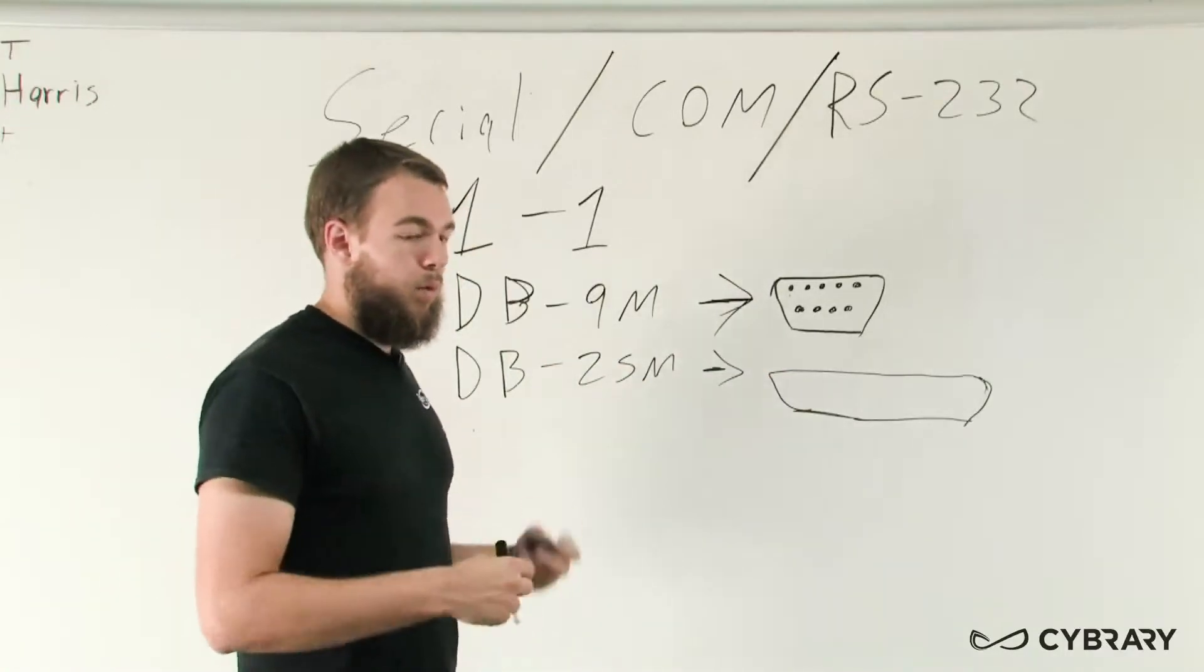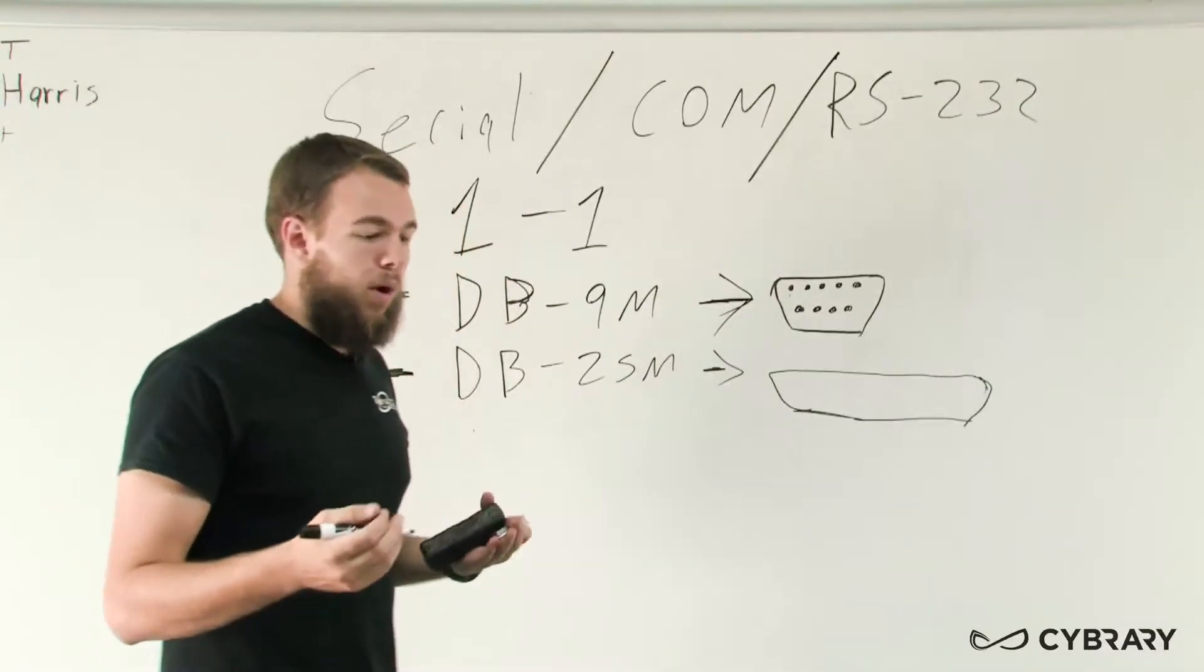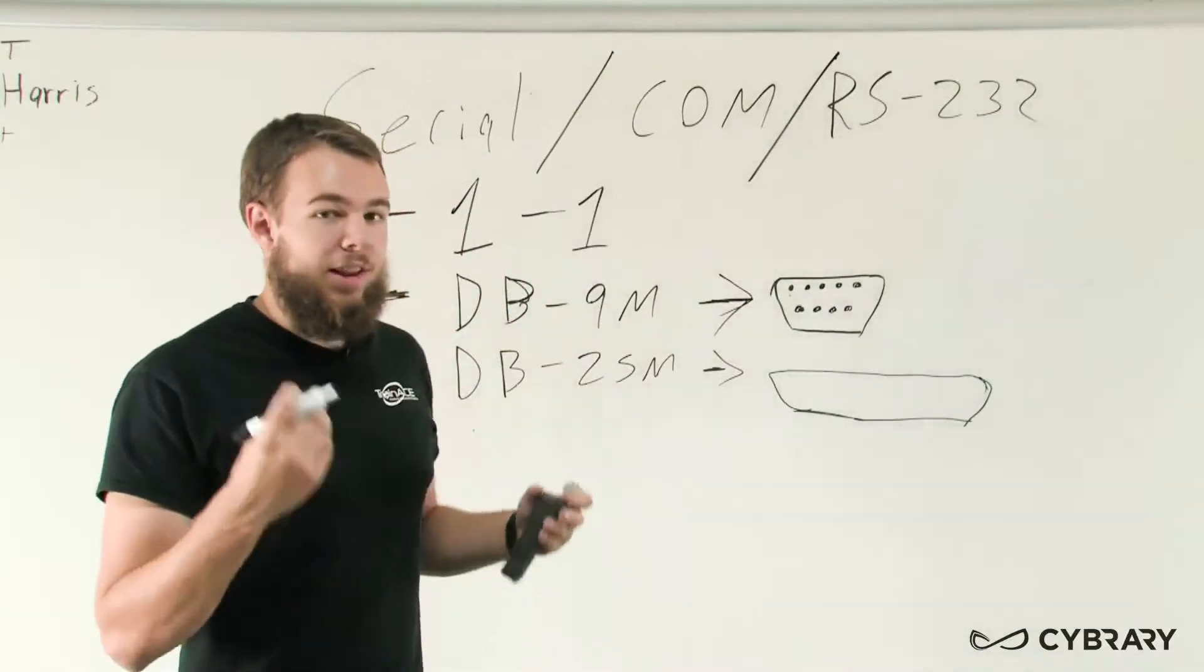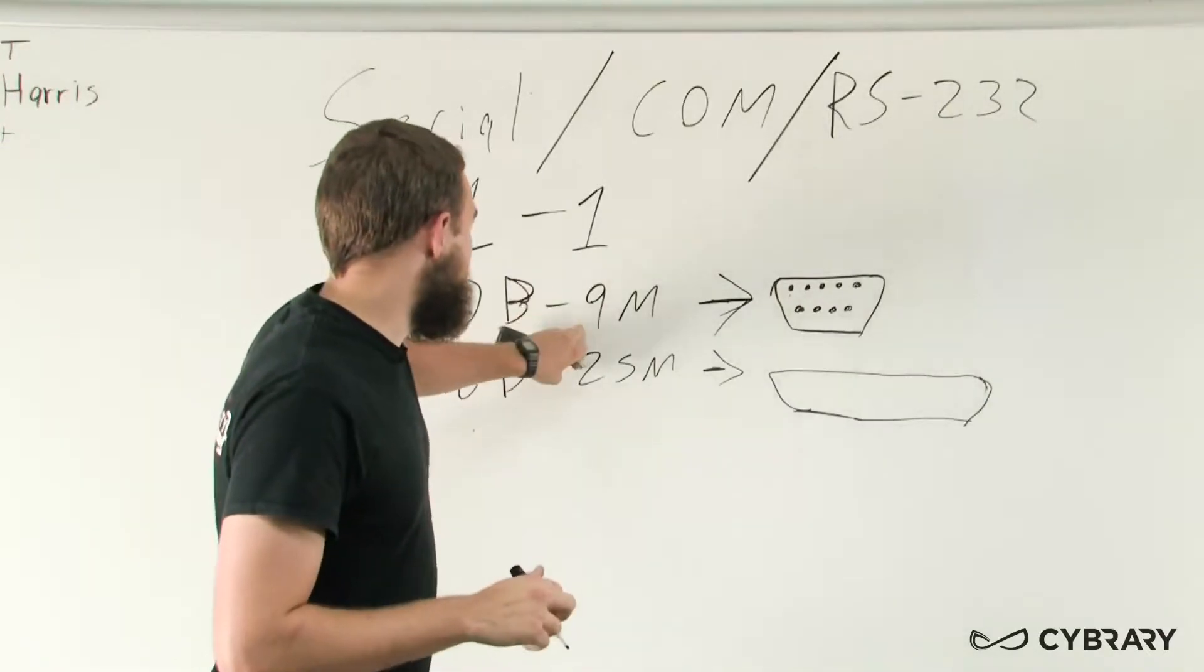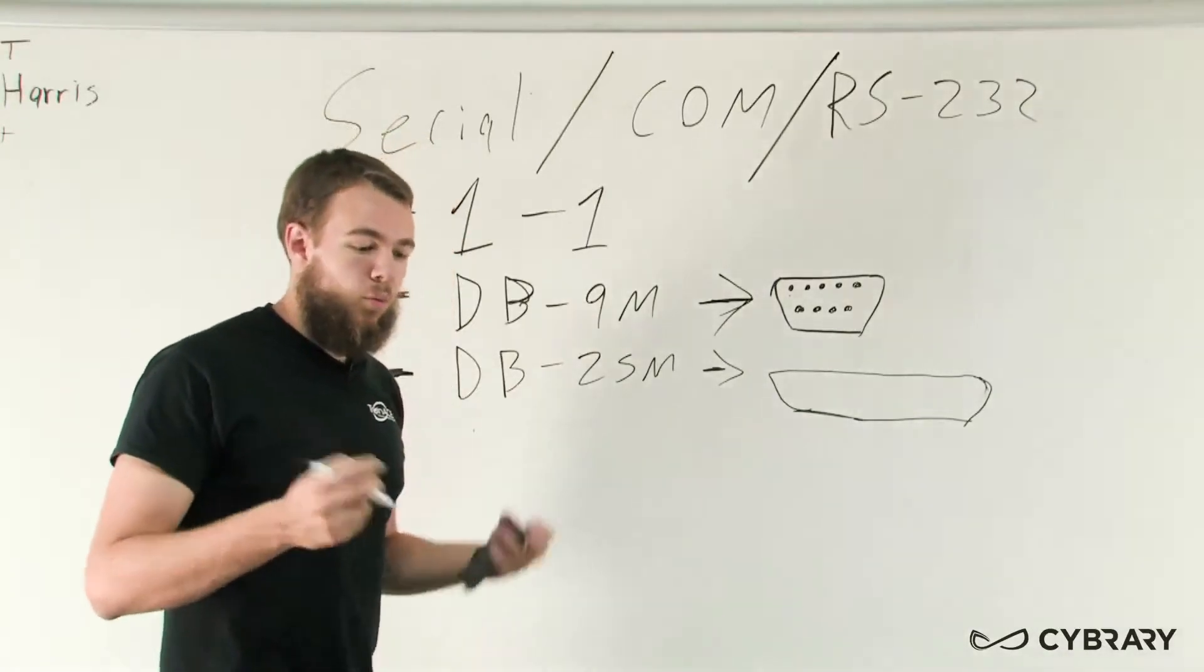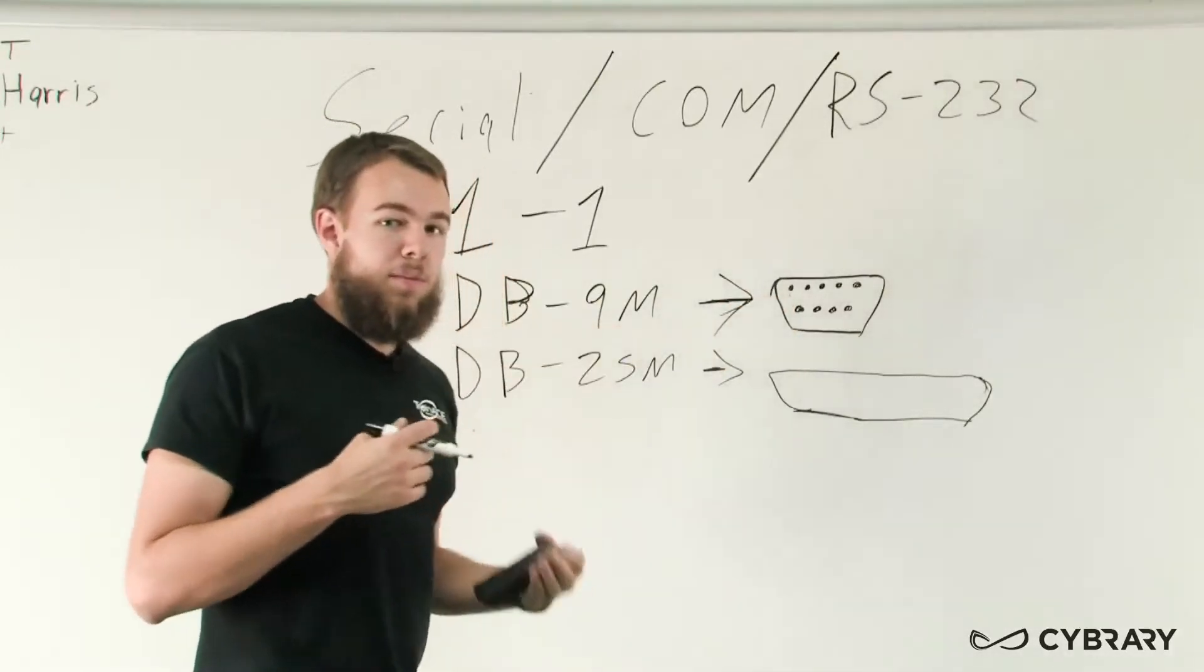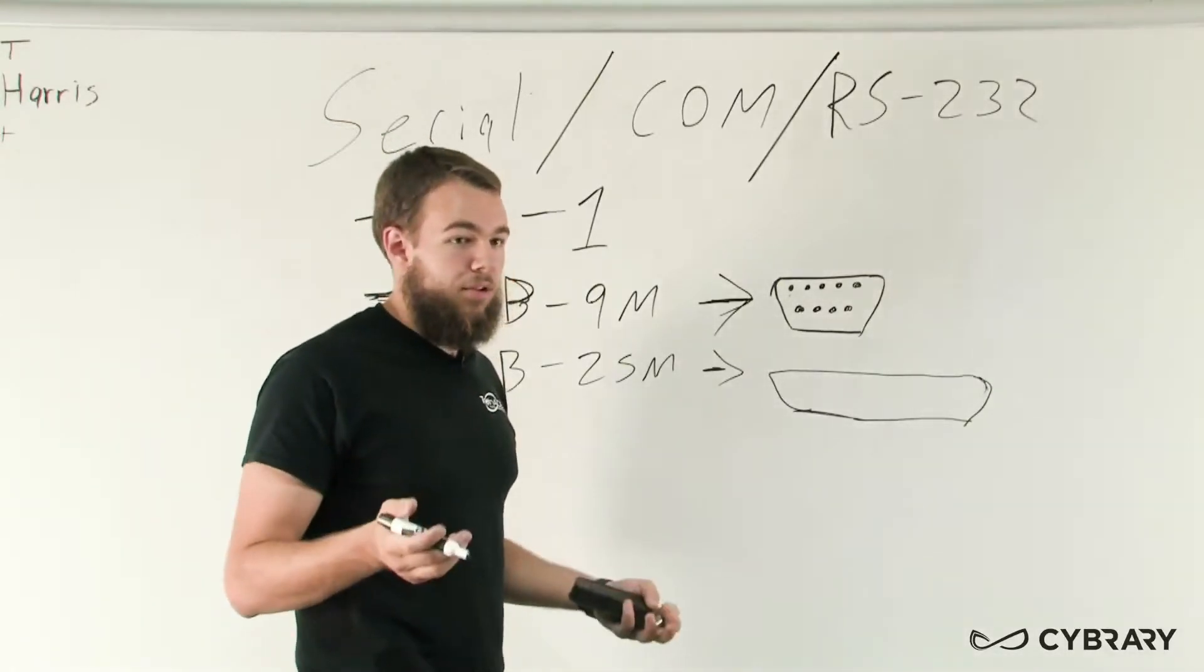Our serial cables, when we're transmitting information, they use at least three of their wires. They use a transmit wire, a receive data wire, and a signal wire. And these three wires are the least amount of wires that will be used in order to transmit information. Not every single serial cable uses the exact same type of wire configuration, which means which pins they use to transmit certain types of information. This is because of the vast amount of different uses that serial cables have.